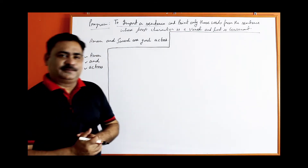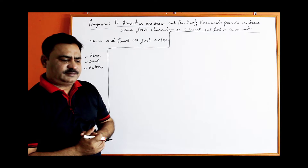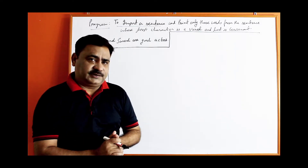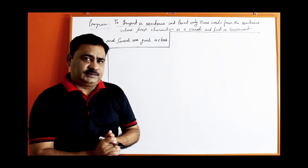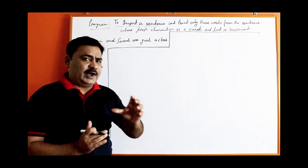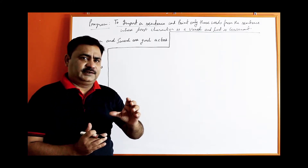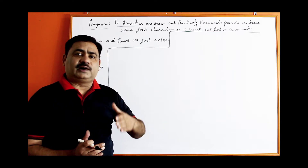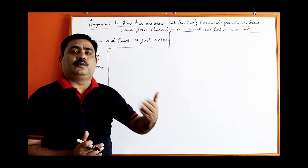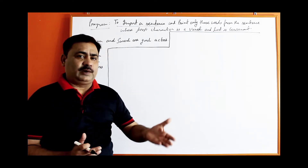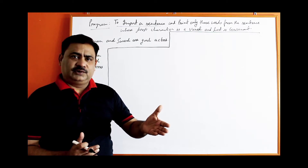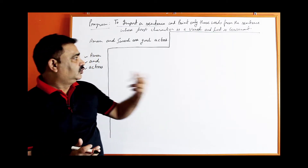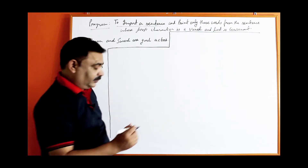Now, how to make this program? We can divide this program into one more functions. The simplest way: make a function, pass one character to it, and it will return true or false depending on whether it is a vowel or not. If it is a vowel, it will return true; if it is a consonant, it will return false.